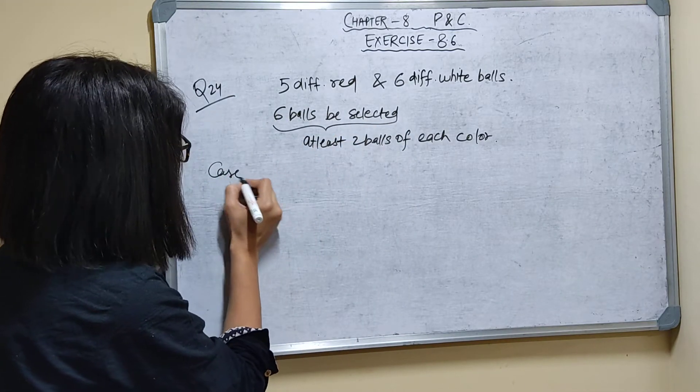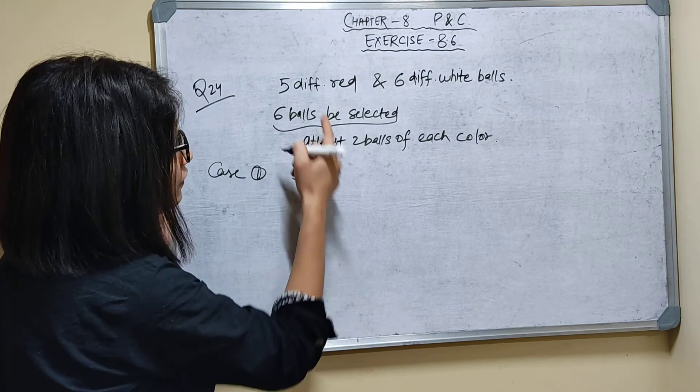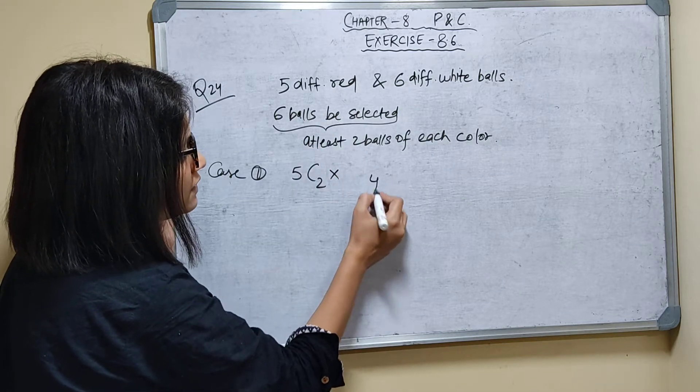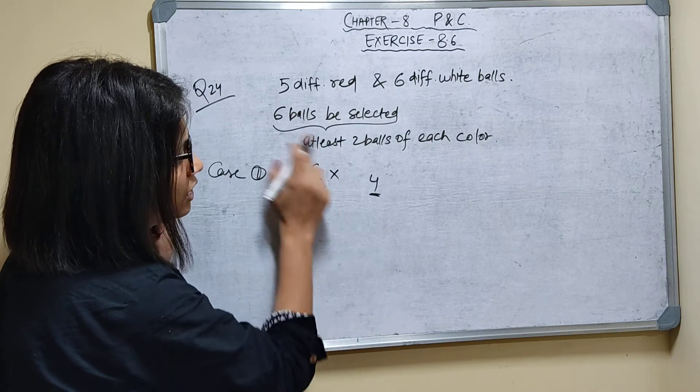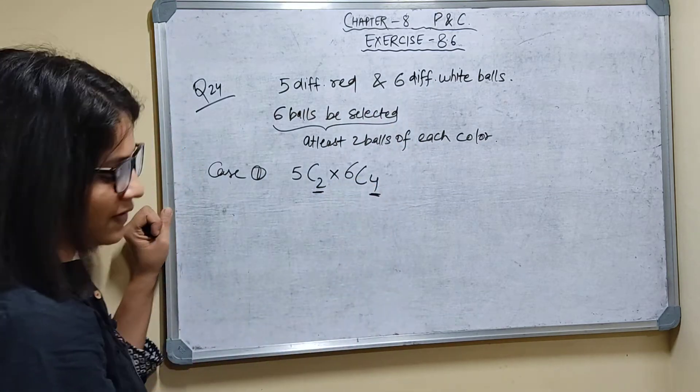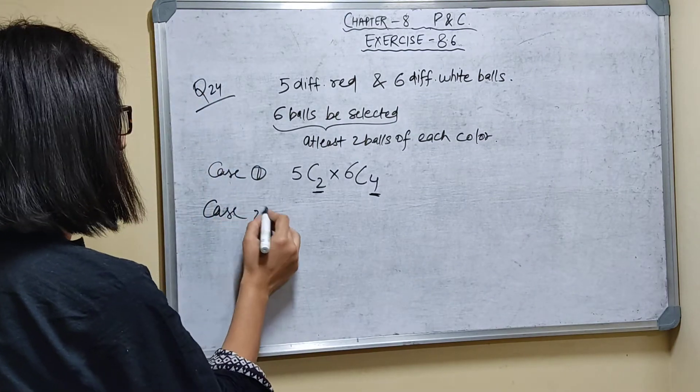Case 1: 5C2 - I'm taking 2 balls from the red ones. Total I have to select is 6, so if I've taken 2, I need 4 more. So 2 plus 4 equals 6. I take from 6 different white balls, so 5C2 × 6C4. That is case 1.